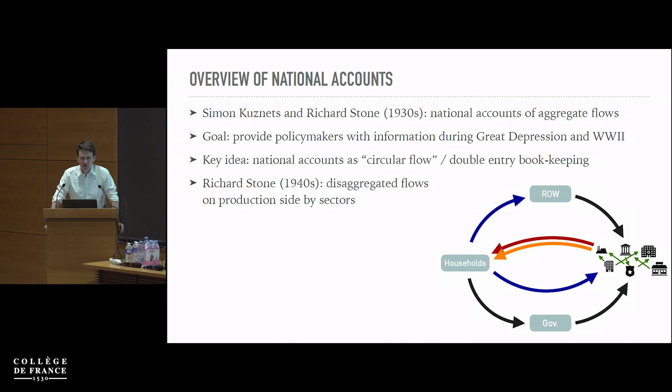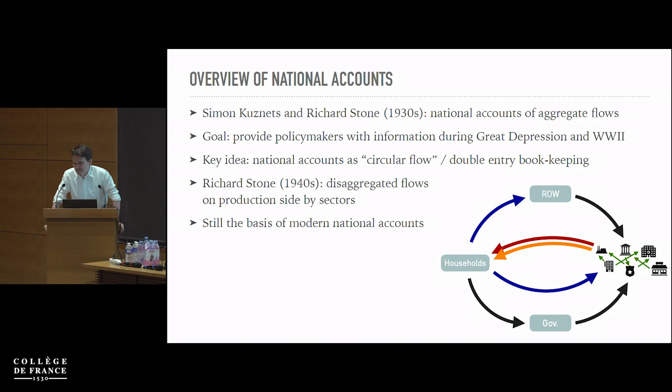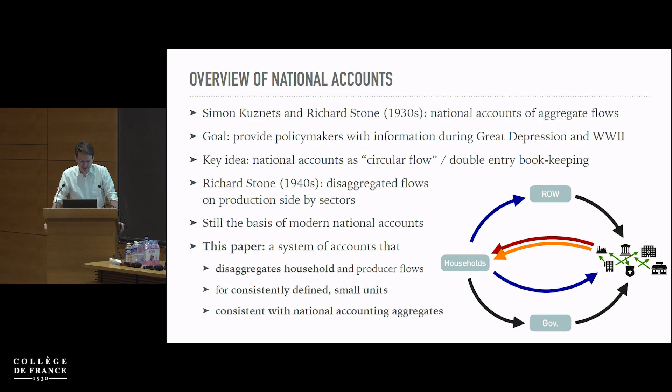Richard Stone in the 1940s also included input-output tables as part of the national accounts and made everything consistent. Before that, input-output tables were a separate thing that Leontief had pioneered. This is still the basis of modern national accounts. Stone — whom you might know from Stone-Geary preferences — won the Nobel Prize not for his amazing preferences but for this, which is quite interesting.